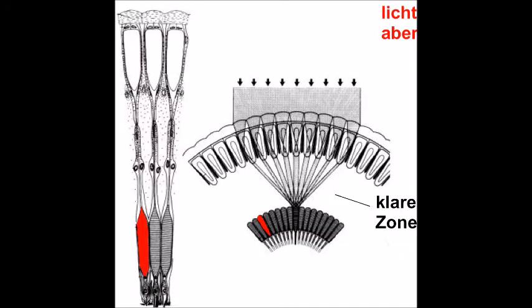Okay, so the superposition compound eye there. Now the main difference here is that there's a clear zone. So that means light can be focused from several lenses onto a single rhabdom. Now another difference is that there's no pigment cells here to absorb the light. So that means there's more light leakage than in the apposition compound eye. So that leads to less of a crisp image.